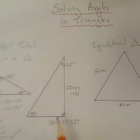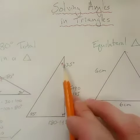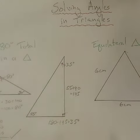Again, you could check that by adding all three. 55 plus 90 plus 35 should equal 180.